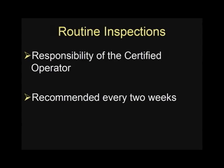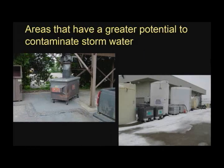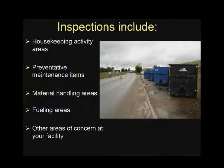Routine inspections are an integral component of the preventative maintenance program and are the responsibility of the certified operator. At most facilities, it is recommended that they be performed and documented at least once every two weeks. Routine inspections focus on areas that have a greater potential to contaminate stormwater, including housekeeping activity areas, preventative maintenance items, material handling areas, fueling areas, and other areas of concern at your facility.